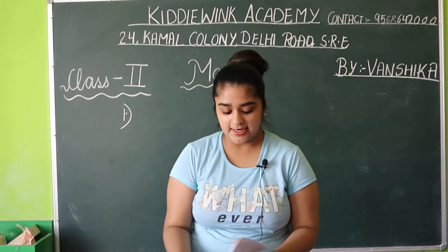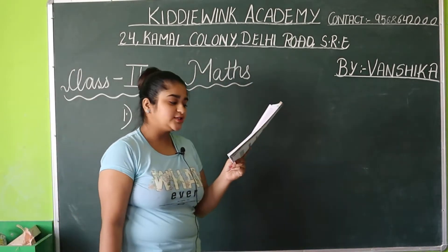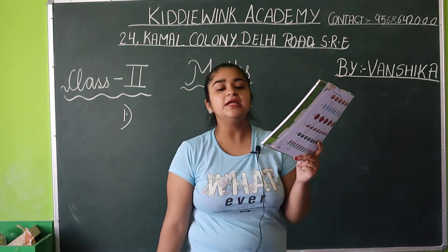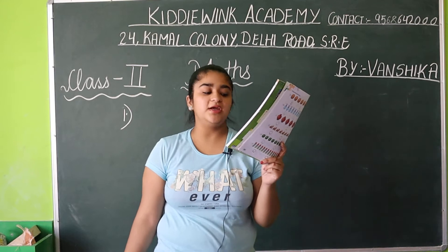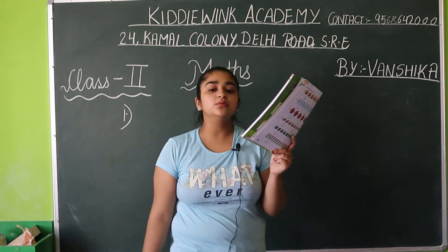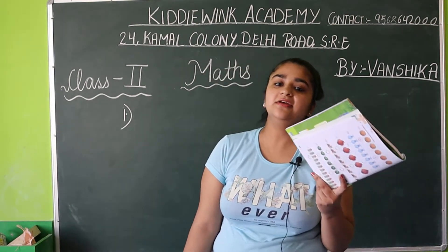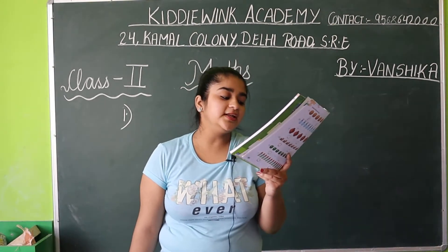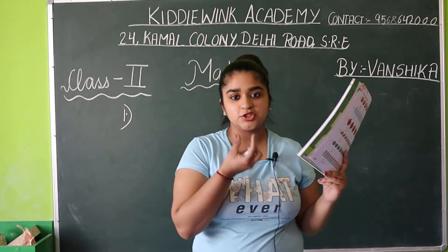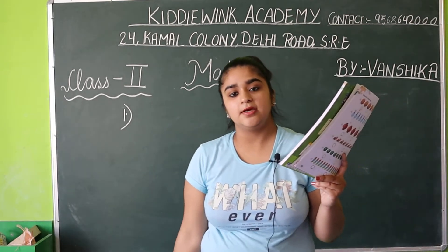Our first word problem is: a company manufactured 54 bulbs in a month. Company ne kitne bulbs banaye one month mein? 54. 17 of them were found defective. Is mein se 17 jo the, woh kharab nikale, defective nikale. Find the number of bulbs with no defects — un bulbs ki sankhya nikalo jisme defective nahi hai.